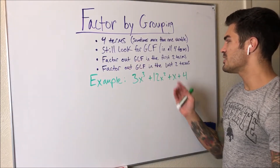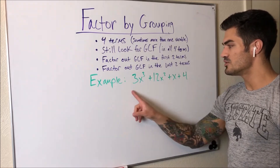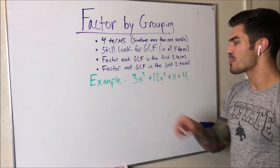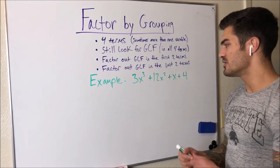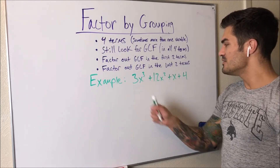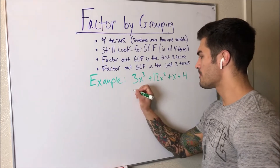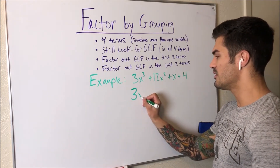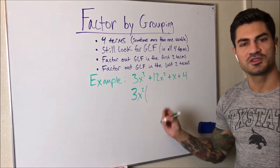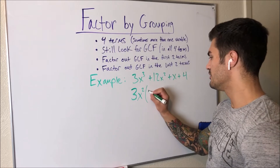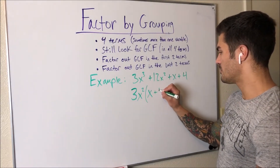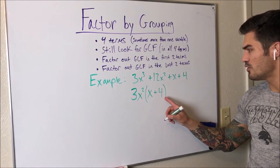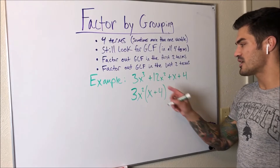So let's go ahead and do this example. We have four terms, which is the tell that we're going to use factor by grouping. There's no common factor between all four terms, so we go straight into it. I'm going to factor out the greatest common factor in the first two terms. Terms are just things separated by plus or minus. In these first two terms, we can take out the three — because three times four gives us twelve — and we can take out X squared, since both terms share an X squared. So the GCF of the first two terms is 3X squared, and what we're left with is X plus four. You can check by multiplying back: you get 3X cubed and 12X squared.